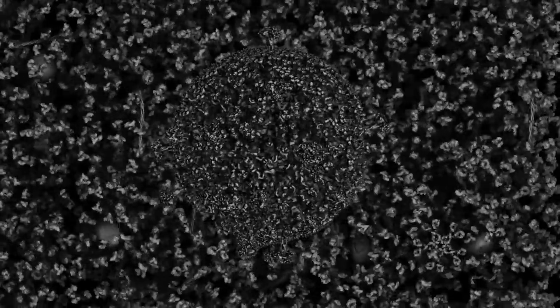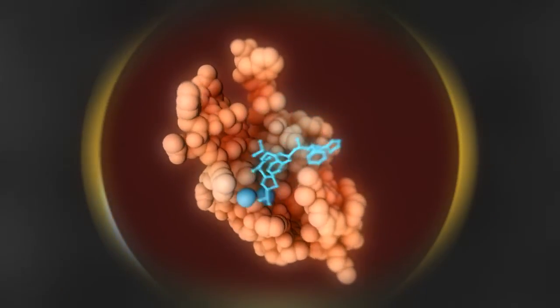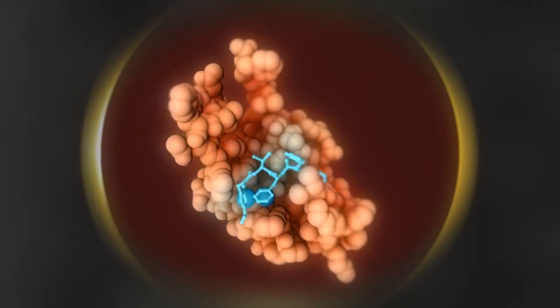Through random mutations, HIV can evolve to become drug-resistant. Here, the shape of the mutant protein has changed just enough so that the drug can no longer bind.